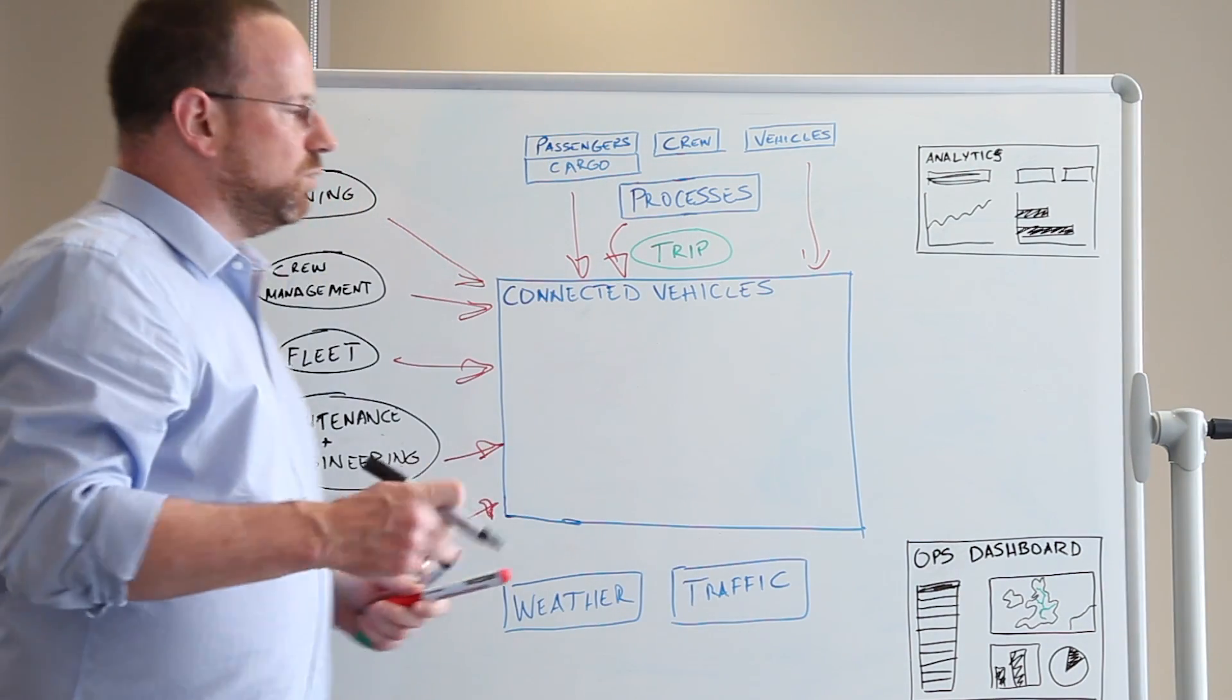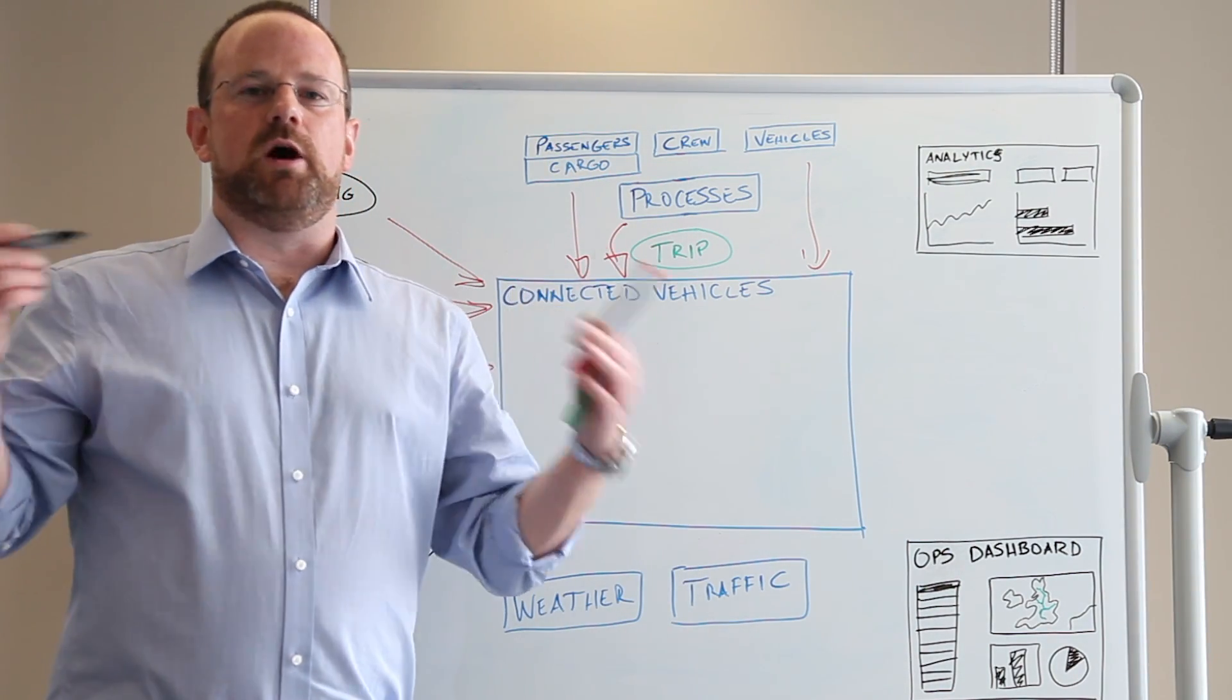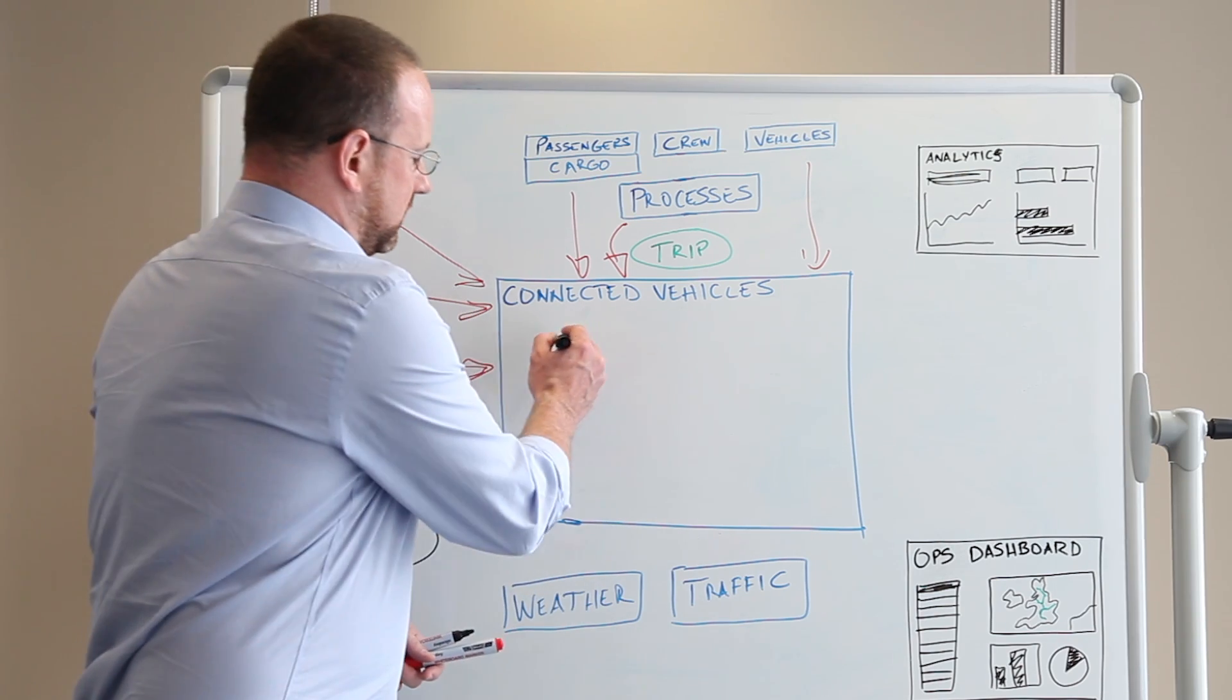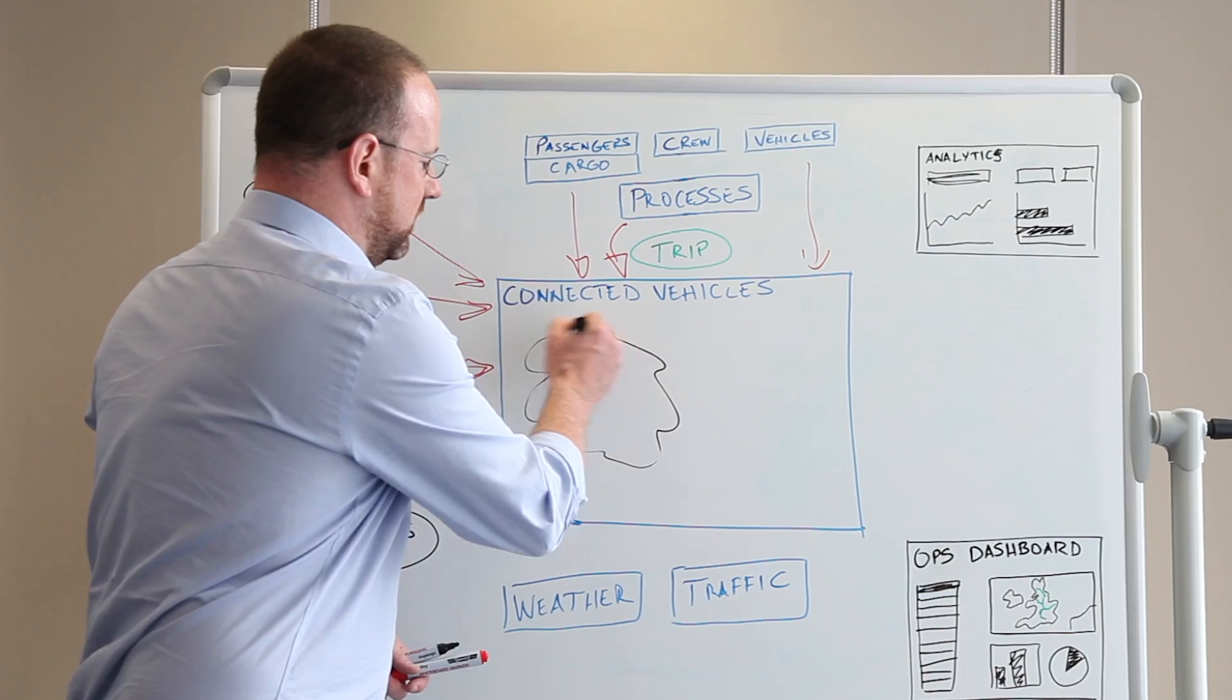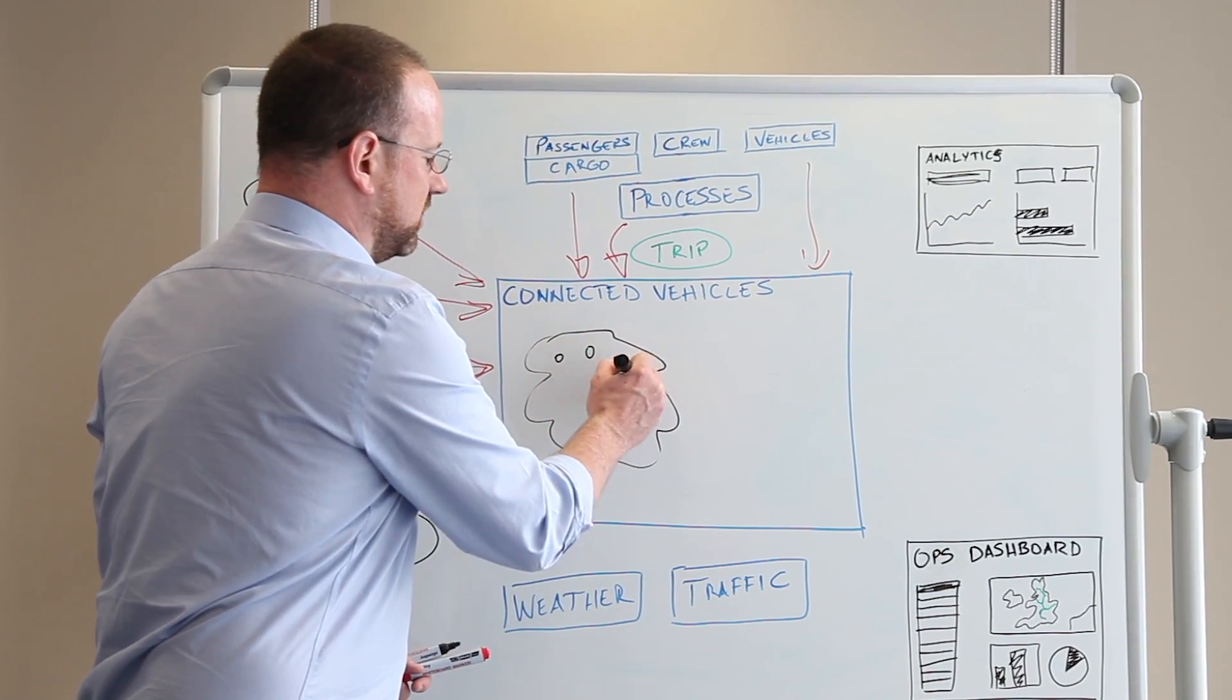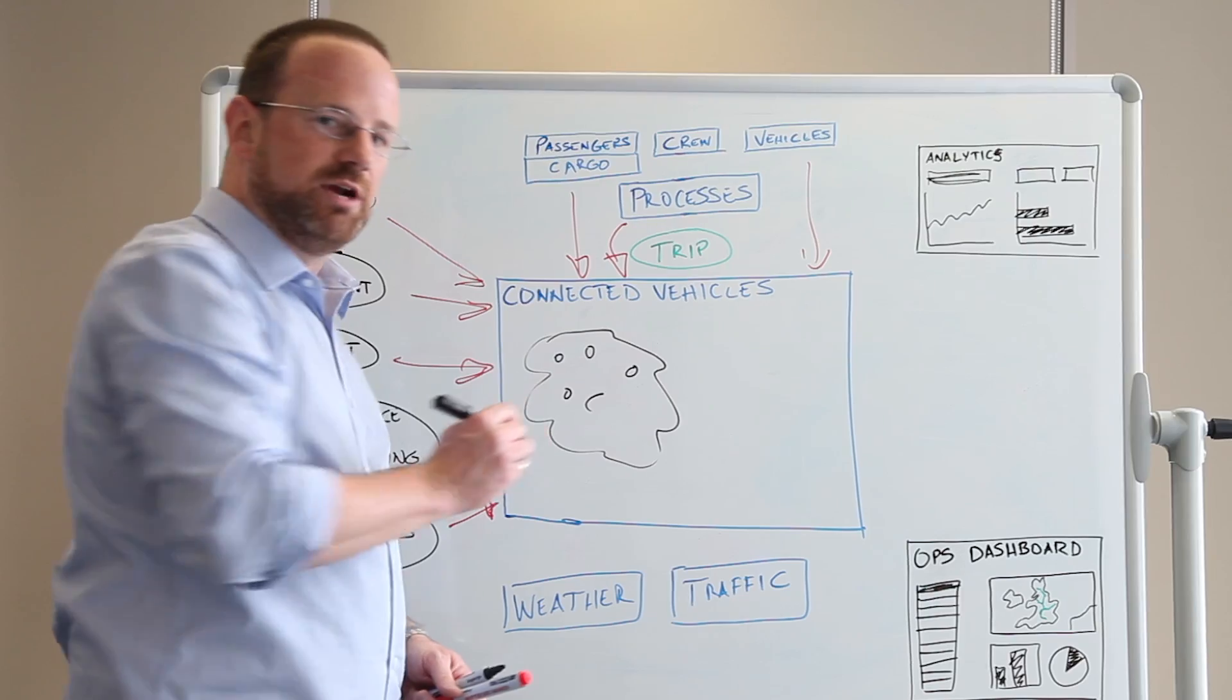Once we're in the accelerator, we're going to build a network model inside of the accelerator, which exists in a data grid, so it's an all-in-memory data model. We're going to capture these as data points inside of the data model, which is based on something called GTFS, which stands for General Transit Feed Specification.